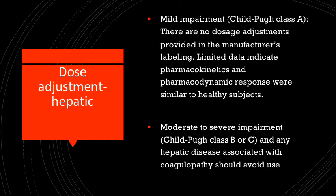Patients with mild hepatic impairments and Child-Pugh class A scores do not need any dose adjustments, but with moderate to severe hepatic impairments and Child-Pugh scores of B or C, use should be avoided.